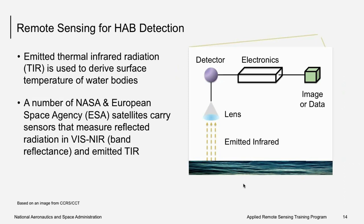Another approach uses thermal infrared radiation emitted by the water surface, which is indicative of changes in surface temperature. The amount of radiation emitted is proportional to surface temperature, so by detecting thermal infrared radiation, one can derive water temperature. This also helps in detecting HABs. A number of satellites launched by NASA and the European Space Agency carry sensors that measure visible, near-infrared, and thermal infrared bands — these data are publicly available and can be used to derive chlorophyll-a concentration and SST.